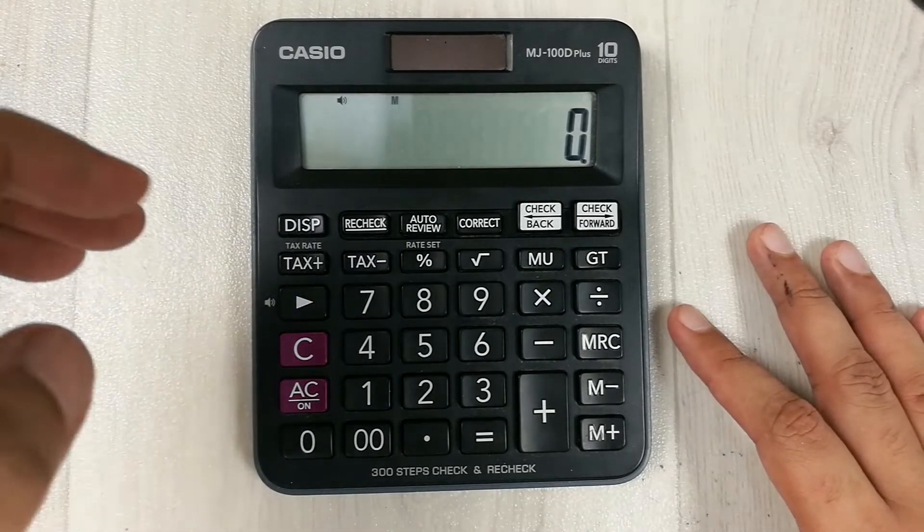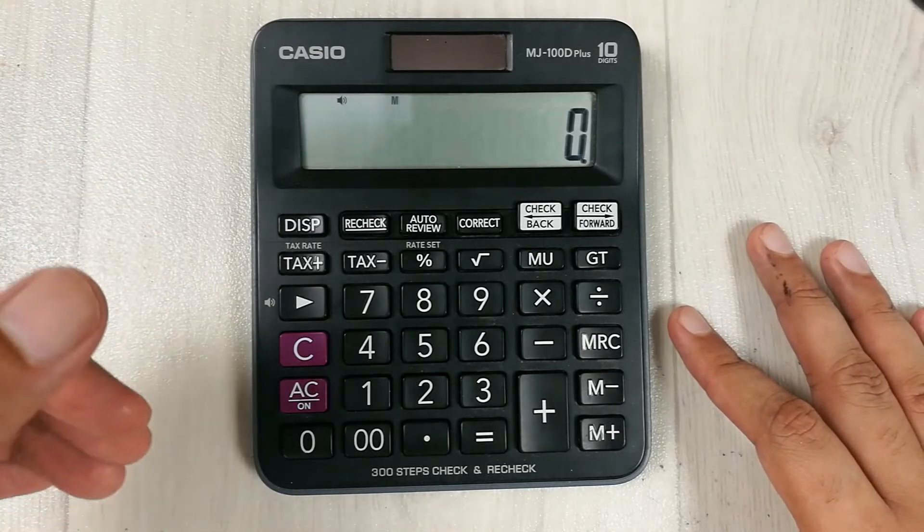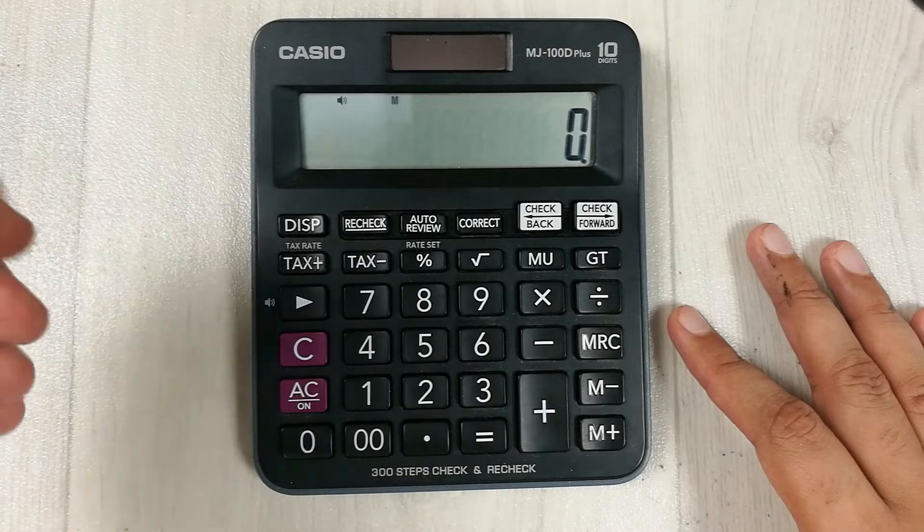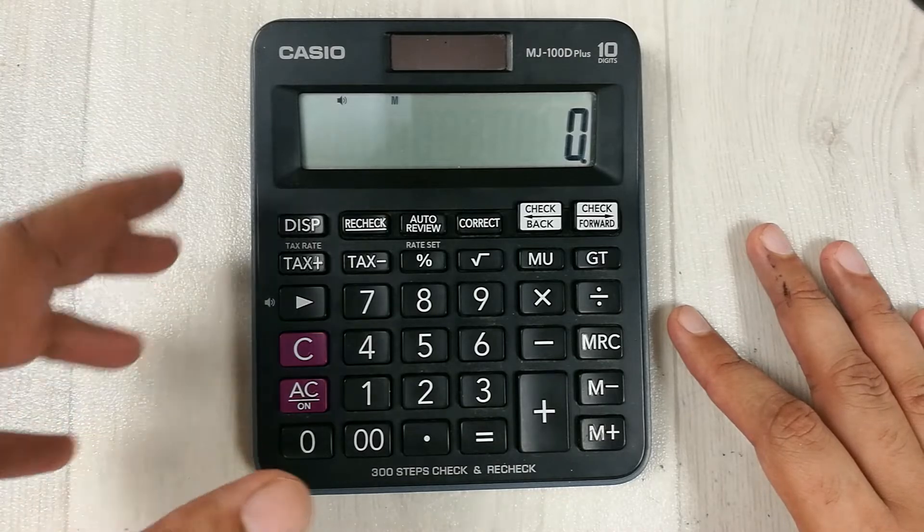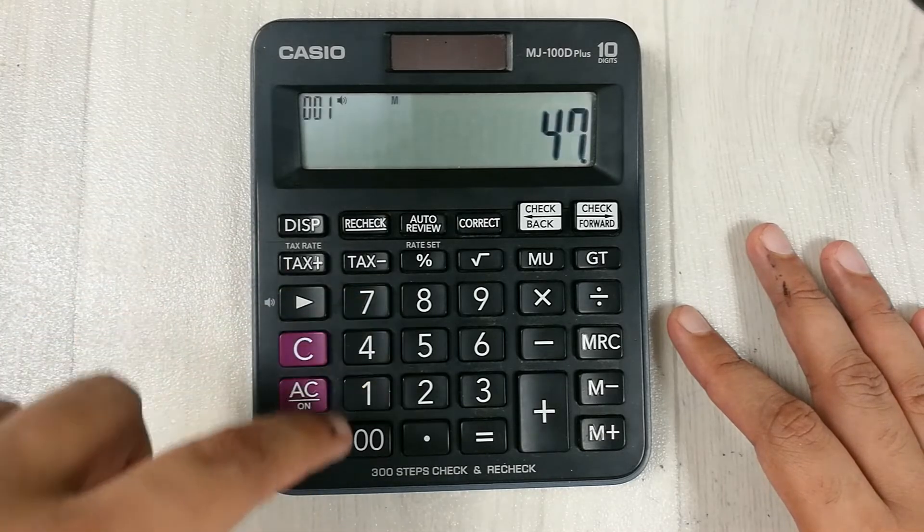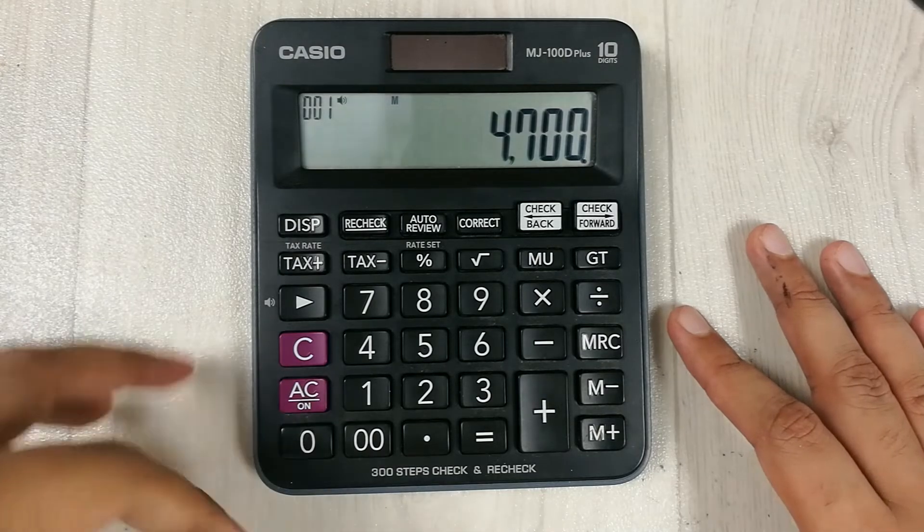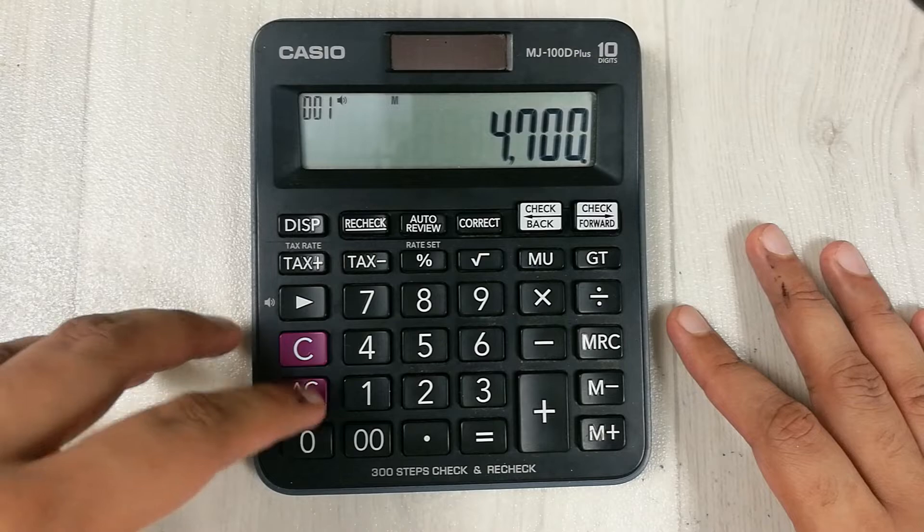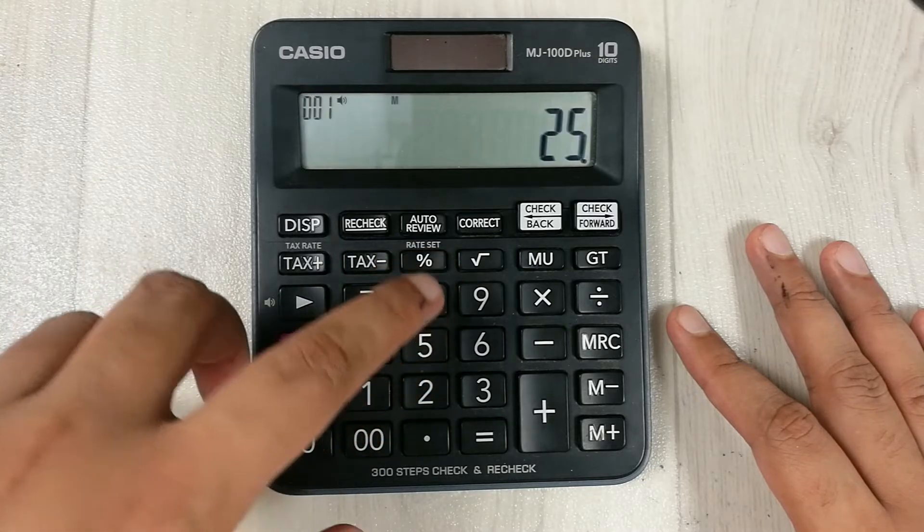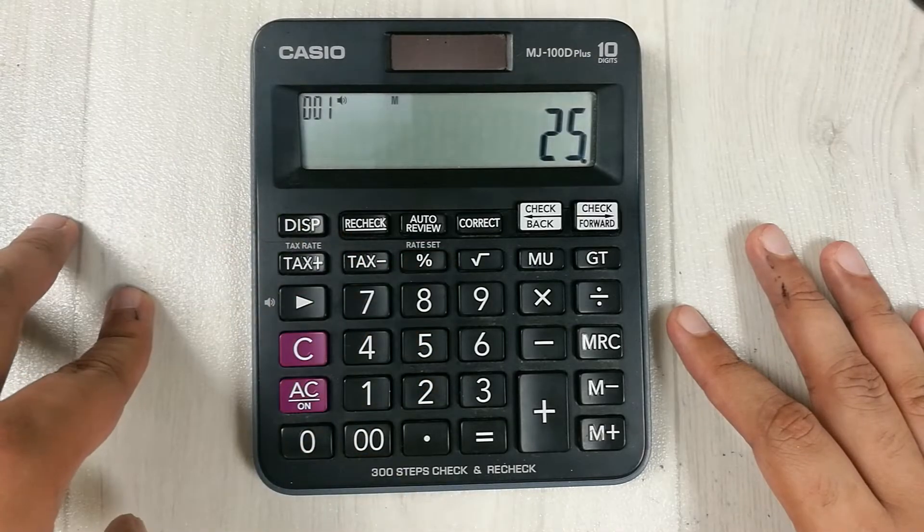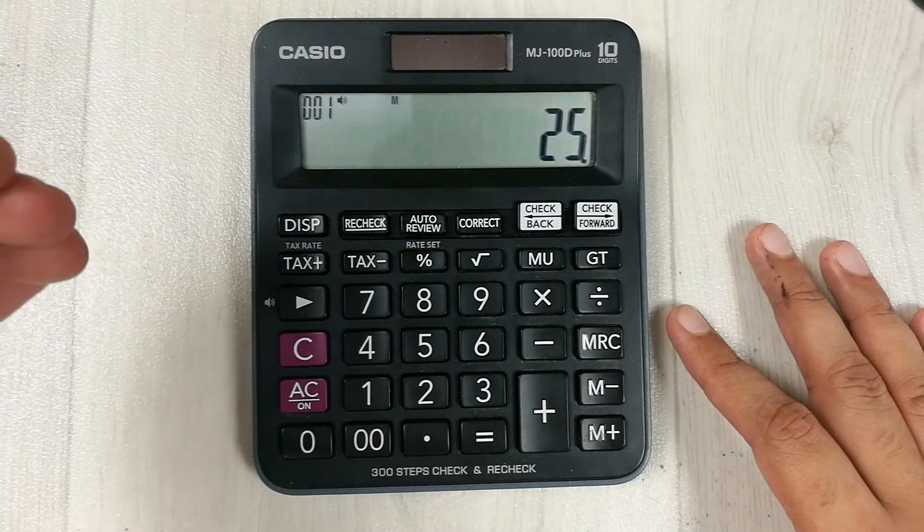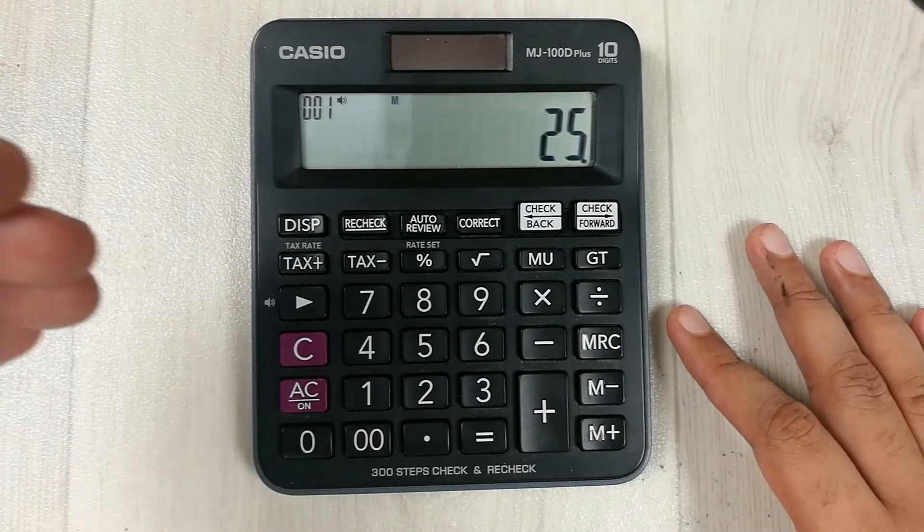For example, the price of an item is 4,700 rupees and the discount on that item is 25 percent. So how can you calculate the final price after this discount?